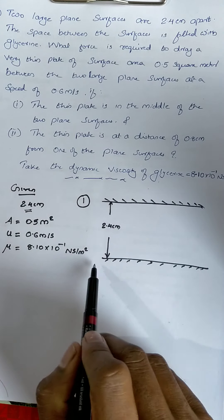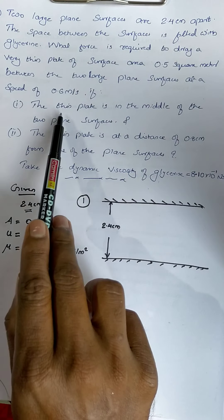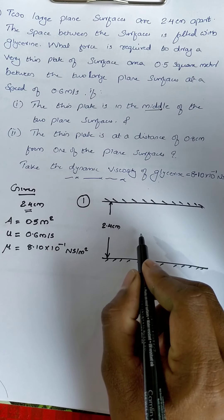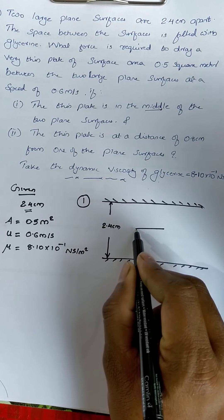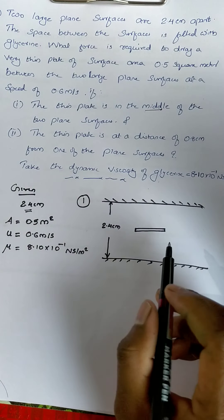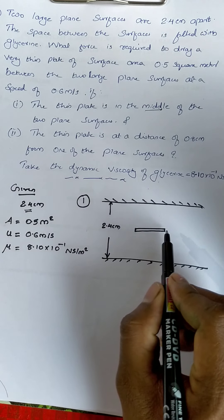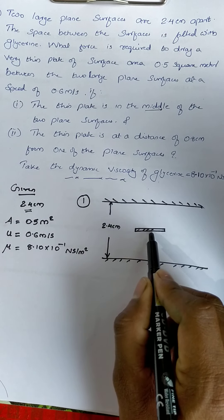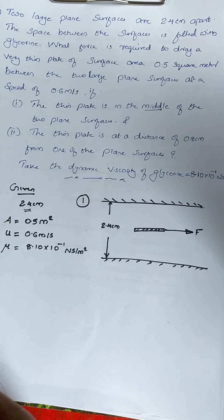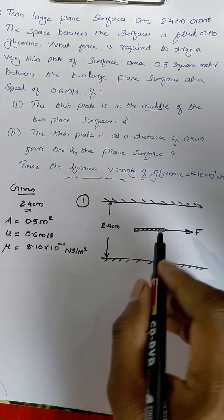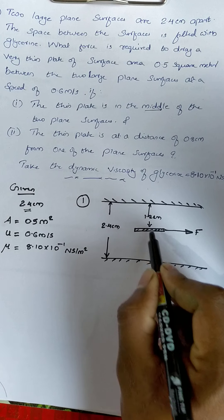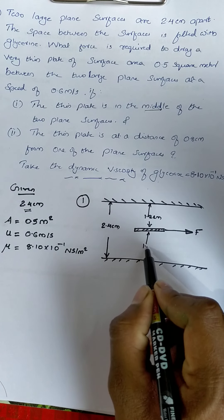For Case 1, the thin plate is in the middle of the two plane surfaces, with glycerin filling the space. We have a force applied to the plate. This distance from the plate to the upper surface is 1.2 cm, and the distance from the plate to the lower surface is also 1.2 cm.